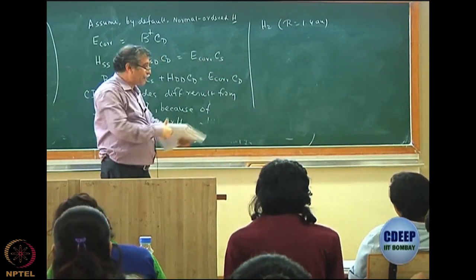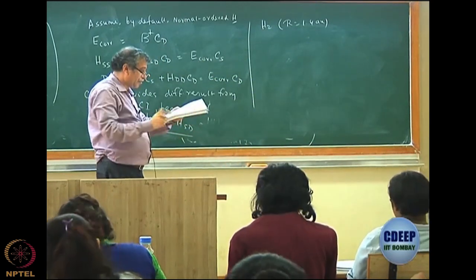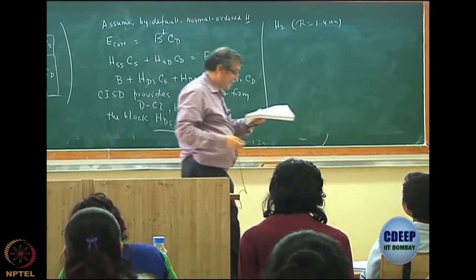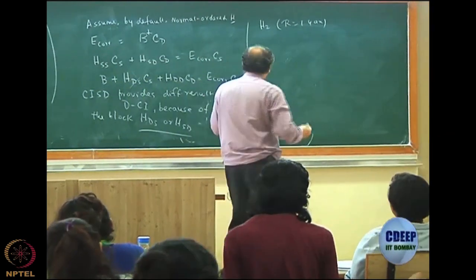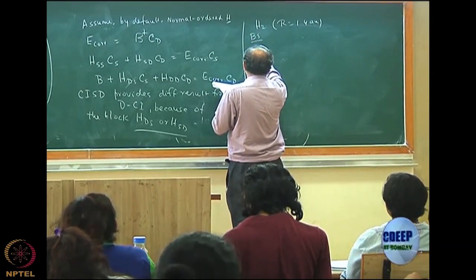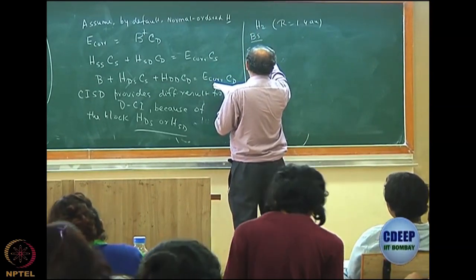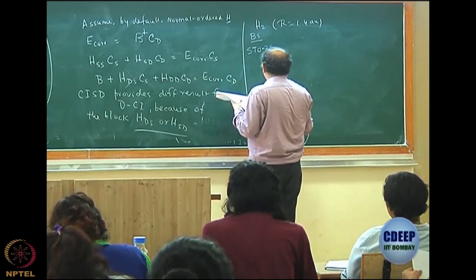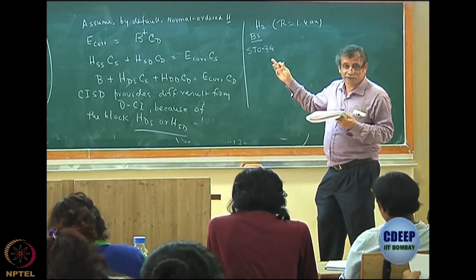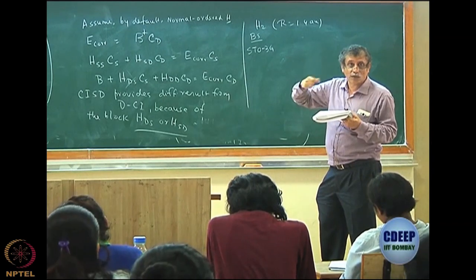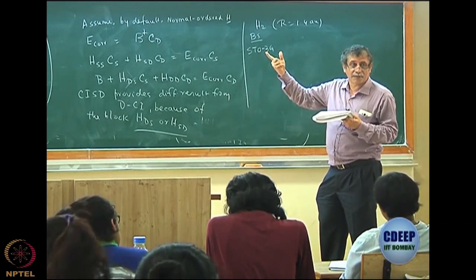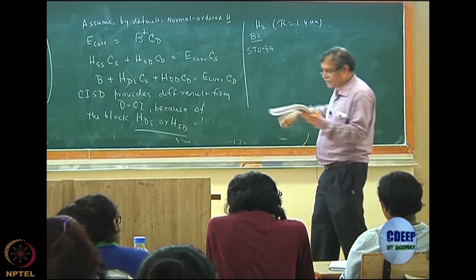I am quoting numbers from a book because it is impossible to remember them. The basis set here starts with STO-3G, which we have already covered — one valence orbital expanded in terms of three Gaussians.